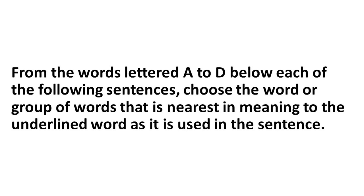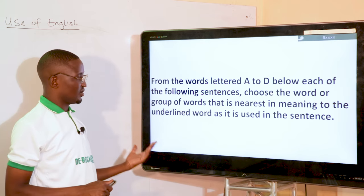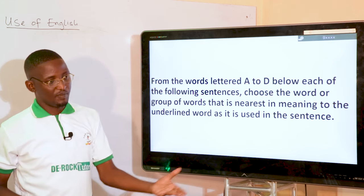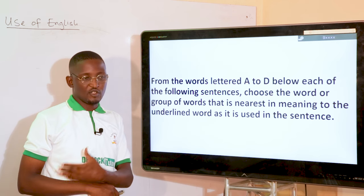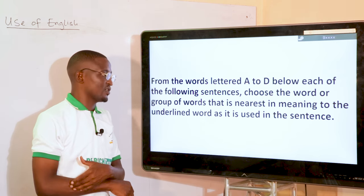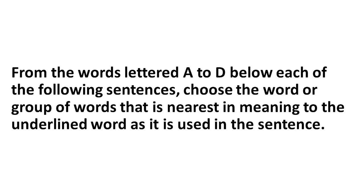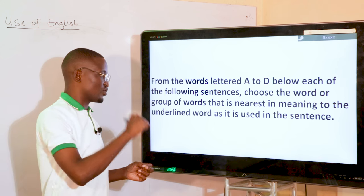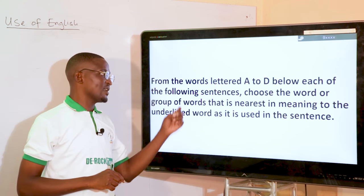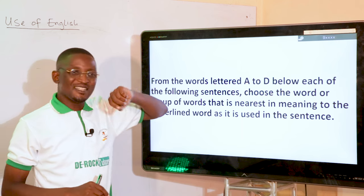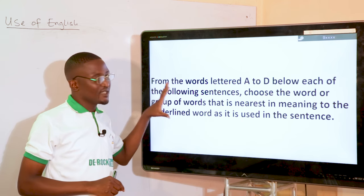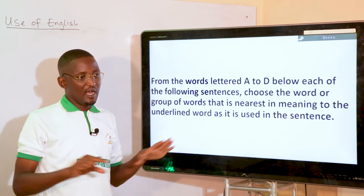From letters A to D, choose the word or group of words nearest in meaning to the underlined word as it is used in the passage — we are talking about synonyms. We have actually talked about antonyms previously. Remember the connotative, contextual meaning — not the dictionary meaning. Whichever option is picked should aptly fit into the gap.